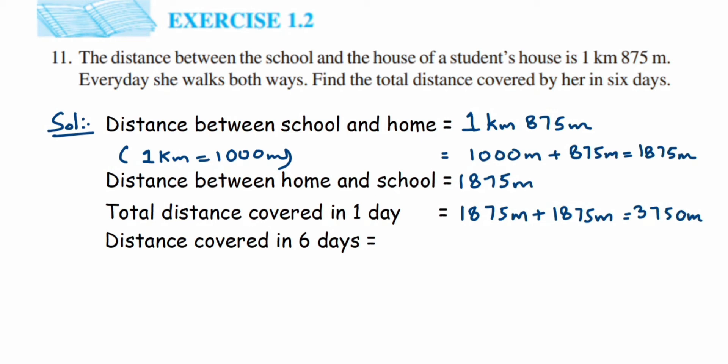I have converted the answer in meters here, so 3750 meter for both going and coming back from the school. Now they are asking for how much distance covered in six days. So we have got only for one day, one day 3750 meters. So for six days you have to multiply with six.